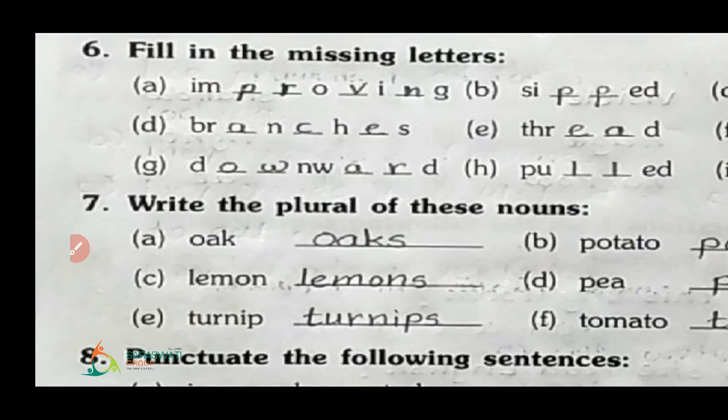Now the missing letter exercise: we have the word with some letters missing. The word is 'improving' — I, M, P, R, O, V, I, N, G. Fill in the missing letters to complete the word 'improving'.